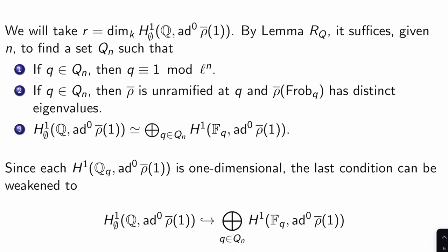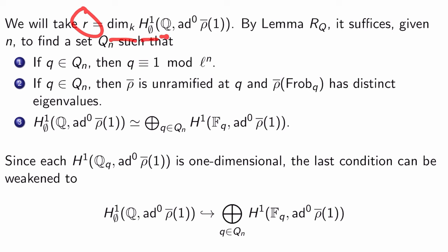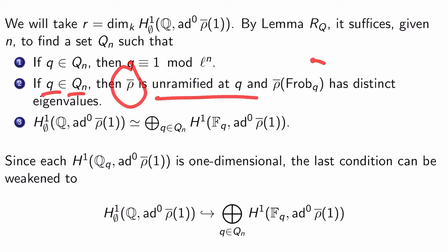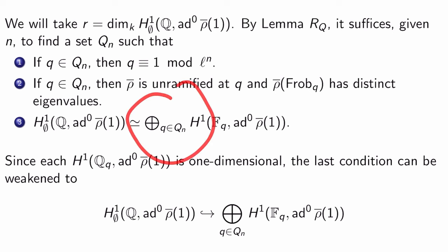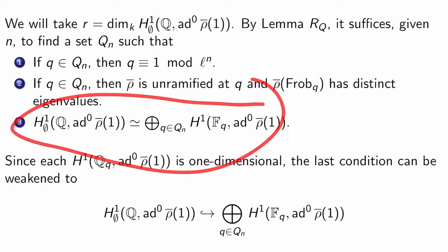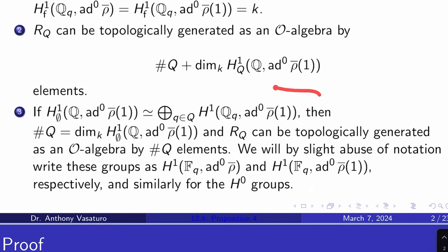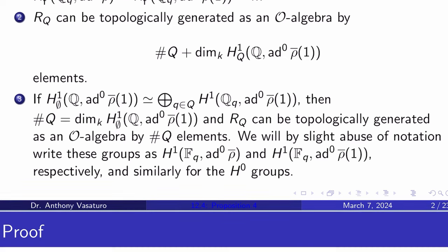The claim is that we take R to be the k-dimension of H^1(∅, ad^0 rho-bar(1)), and that works. By Lemma RQ, given N, it suffices to find a set Q_N such that: (1) q ≡ 1 mod L^N for q in Q_N; (2) rho-bar is unramified at q and rho-bar(Frobenius_q) has distinct eigenvalues; (3) H^1(∅, ad^0 rho-bar(1)) is isomorphic to the direct sum over primes q in Q_N of H^1_f(Q_q, ad^0 rho-bar(1)). That third condition changed, but we're allowed to use it by part 3 of Lemma RQ — which says we really just need the cardinality of Q_N.